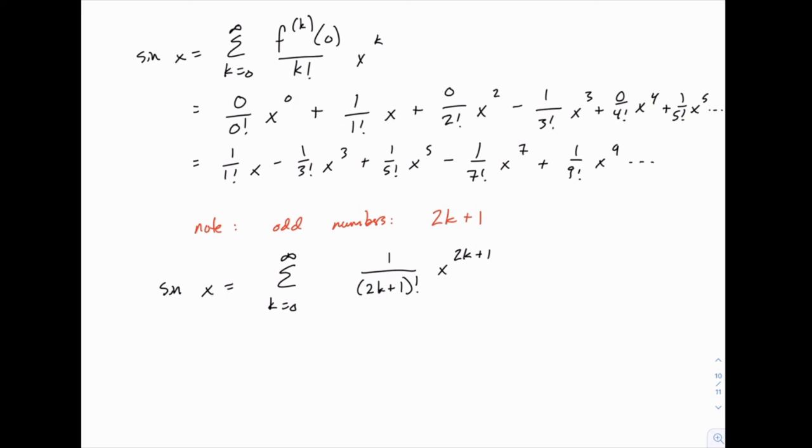And the only piece we haven't addressed yet is the alternating part. We know how to get that. A negative 1 to the k gives us that alternating part. And we just double-check. When k equals 0, this is positive 1, this is 1, and this is 1, which gives us that first term.